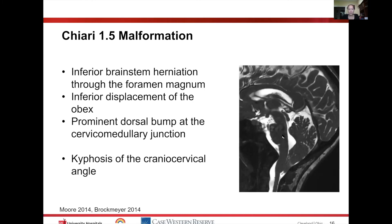This is the classic Chiari 1.5 malformation. You can see the pons and the elongation of the entire medulla — that medullary bump right at the base. The fourth ventricle itself is elongated and displaced downward. This is our retroflex dens, with the foramen magnum visible here. You still have the cerebellar tonsils herniated down, but the morphology is different from a classic Chiari 1. Oftentimes this is associated with kyphosis of the cranioservical angle.